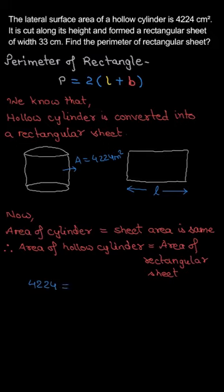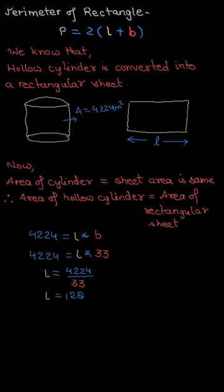The hollow cylinder area is 4224 equal to L into B. We know B is 33, so dividing both sides by 33, we get L equal to 128 centimeters.